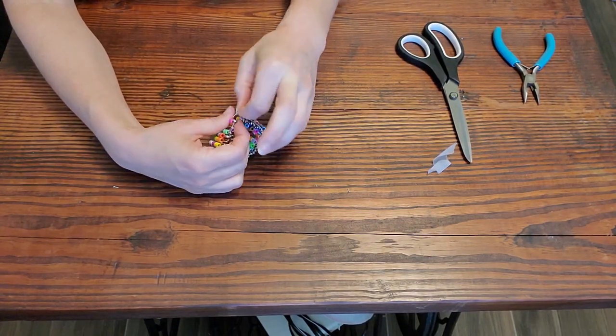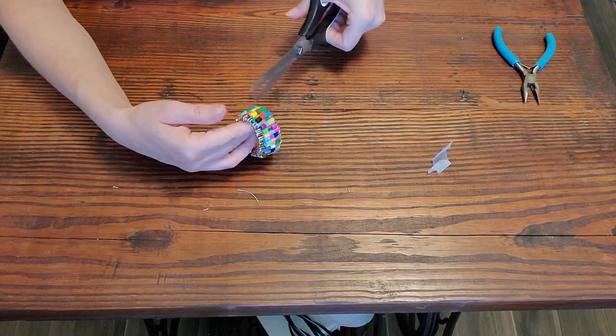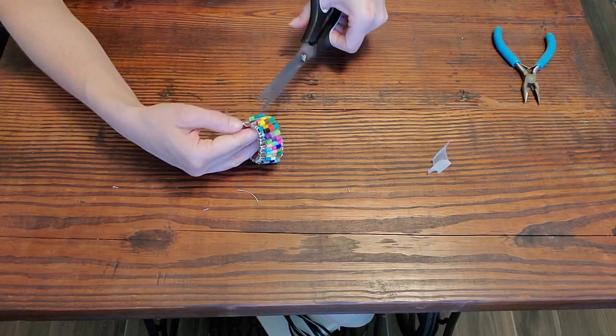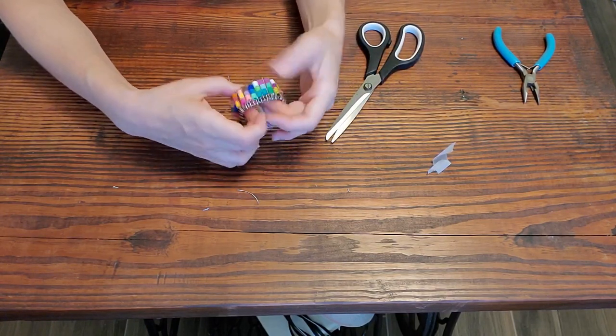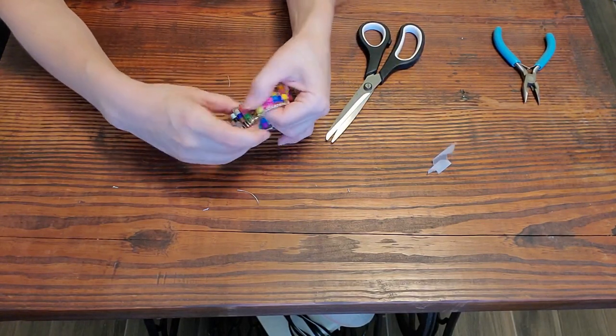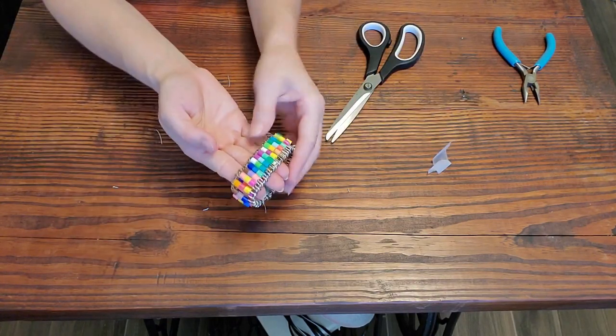I want to weave it right back to where it was coming through a little bit, and then I will trim off the extra. And then move the beads around so they're nice and evenly spread out. And then I have a lovely bracelet.